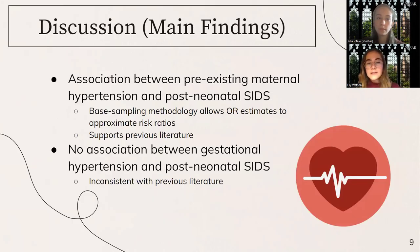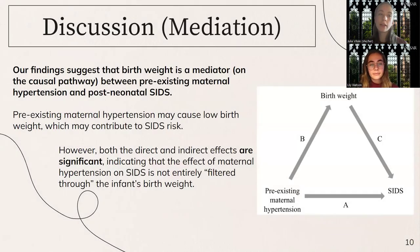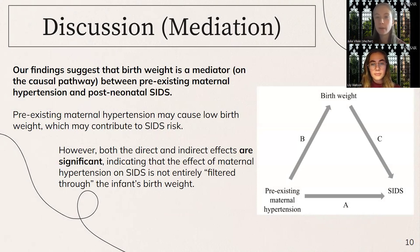Overall, we found an association between pre-existing maternal hypertension and post-neonatal SIDS, and our base sampling methodology allows our odds ratio estimates to approximate risk ratios, which supports the findings of previous literature. However, we did not see an association between gestational hypertension and post-neonatal SIDS, which remains inconsistent with prior literature. Our mediation analysis findings suggest that birth weight is on the causal pathway between pre-existing maternal hypertension and post-neonatal SIDS — the hypertension may be causing low birth weight, which then contributes to SIDS risk. Both the direct and indirect effects are significant, indicating that the effect of maternal hypertension on SIDS is not entirely filtered through the infant's birth weight.